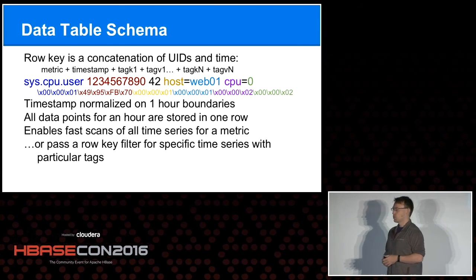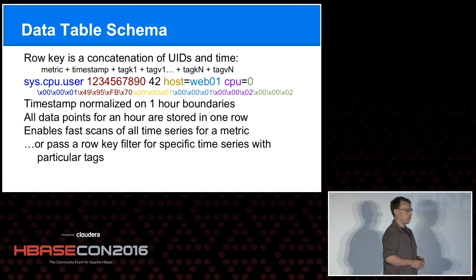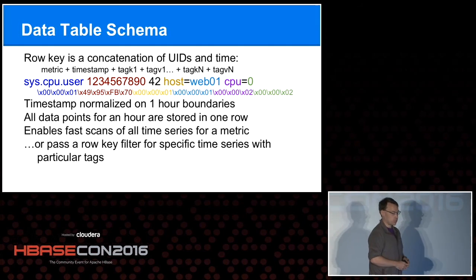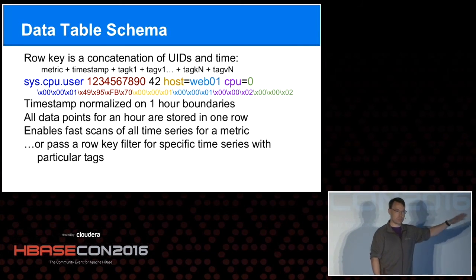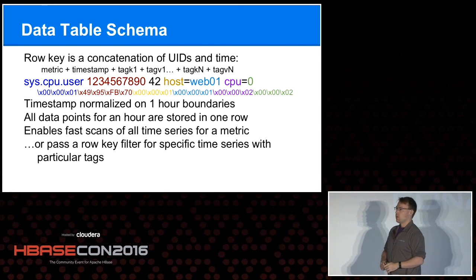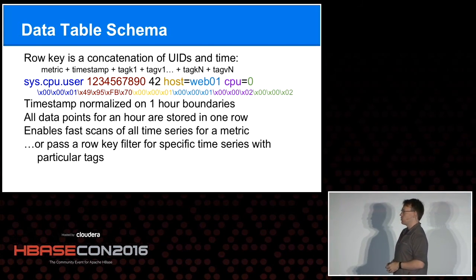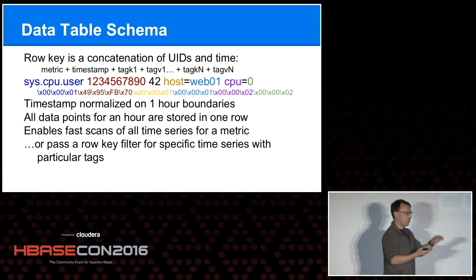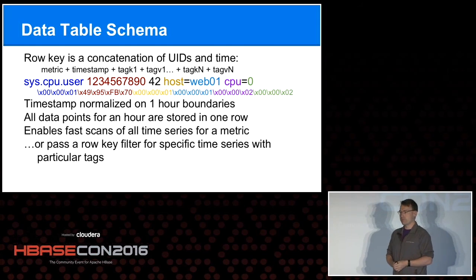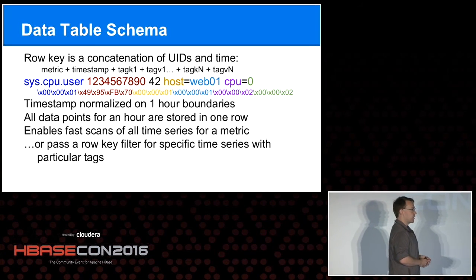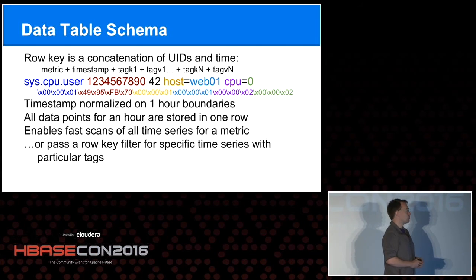The schema: the row key is going to be the metric UID, the timestamp aligned to a one-hour boundary, then tag key/tag value UID combinations. Because HBase is sorted in order, if you want to fetch a metric without knowing which host or tags you want, we can do a scan in HBase across all those values for your time range and fetch all that data pretty quickly. This schema is great for aggregations. The downside is that if you have super high cardinality for your metrics, picking out little bits and pieces can be pretty slow.